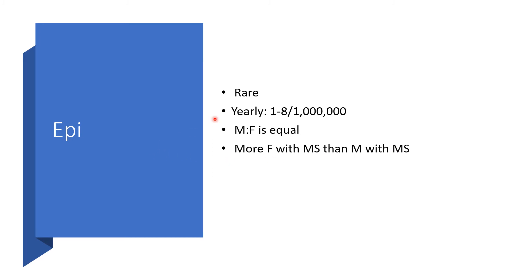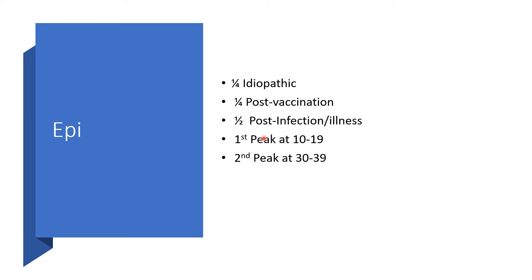Epidemiologically, transverse myelitis is rare. Yearly occurrence is about 1 to 8 per million. The male-to-female ratio is equal, but among people with multiple sclerosis, more females come down with transverse myelitis than males. About 25% will have an idiopathic cause, 25% will be post-vaccination, and about 50% will be post-infection or post-illness. There are bimodal peaks: the first at ages 10 to 19, and the second at 30 to 39.